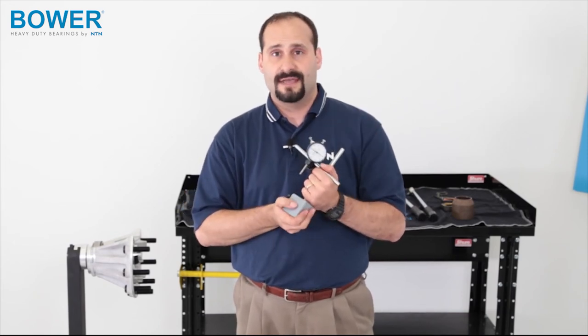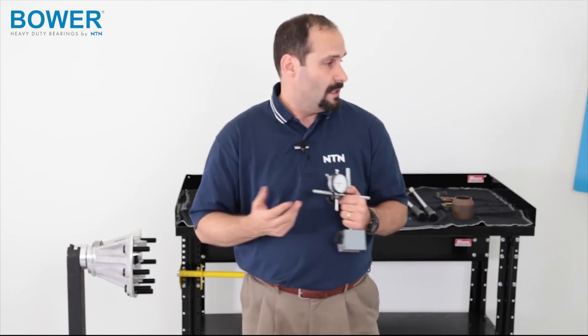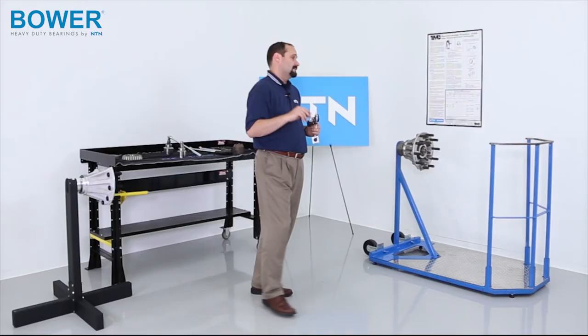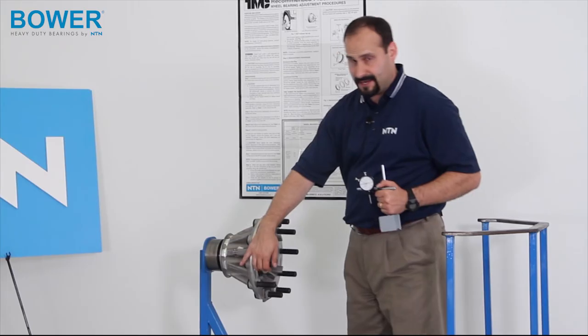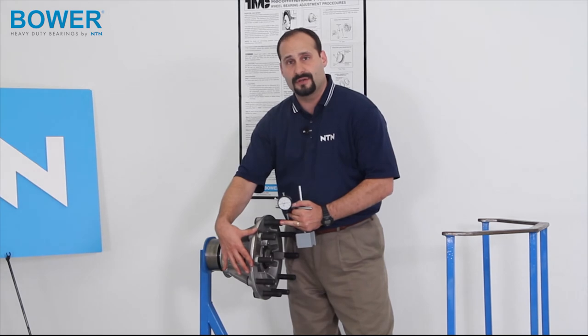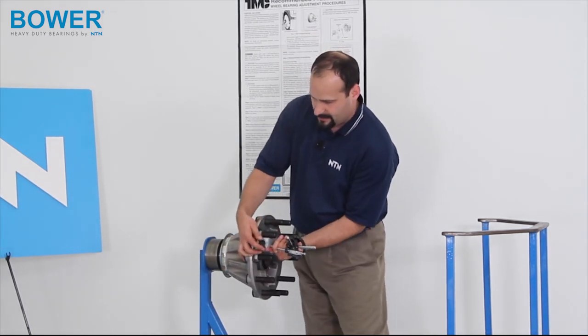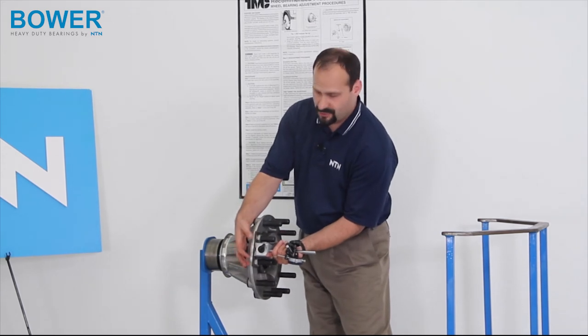Some of you might be asking, okay, I've started using aluminum hubs. The magnetic base won't work. What do I do? Well, two things. As you can see, what we've done with our hub right here, we have a steel plate that'll go over two of the mounting bolts for the wheel and tighten down, and you can put the magnetic base there, and it'll work. So, that's where you put your magnetic base.